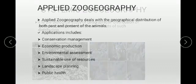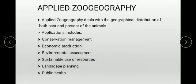Now, applied zoo geography deals with the geographical distribution of both past and present animals. Its applications include: conservation management, economic production, environmental assessment, sustainable use of resources, landscape planning, and public health.